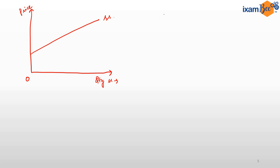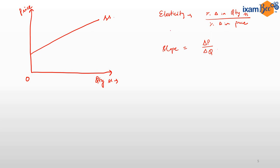Let's understand what elasticity is, what the slope of a curve is, and the relationship between the two. Elasticity gives us the percentage change in quantity supplied with respect to percentage change in price, whereas slope gives us the absolute change — given by ΔP upon ΔQ in our diagram. The major distinction is that slope is affected by the unit of measurement, whereas elasticity is not, because it measures percentage change.